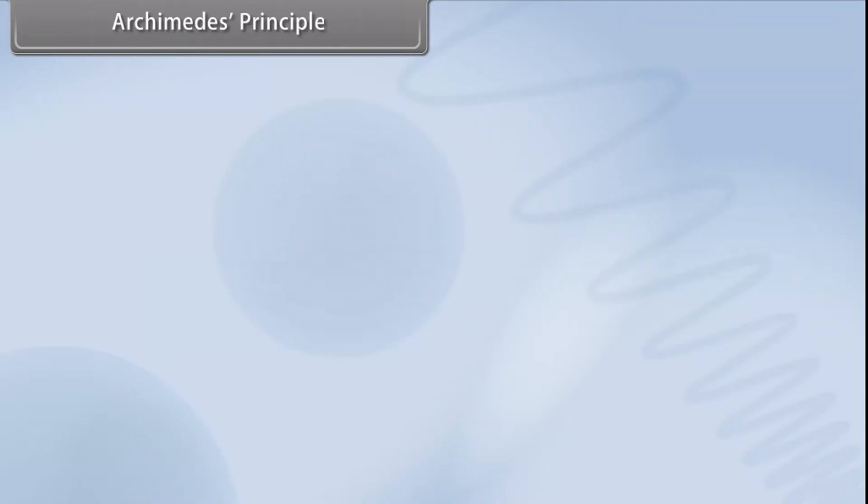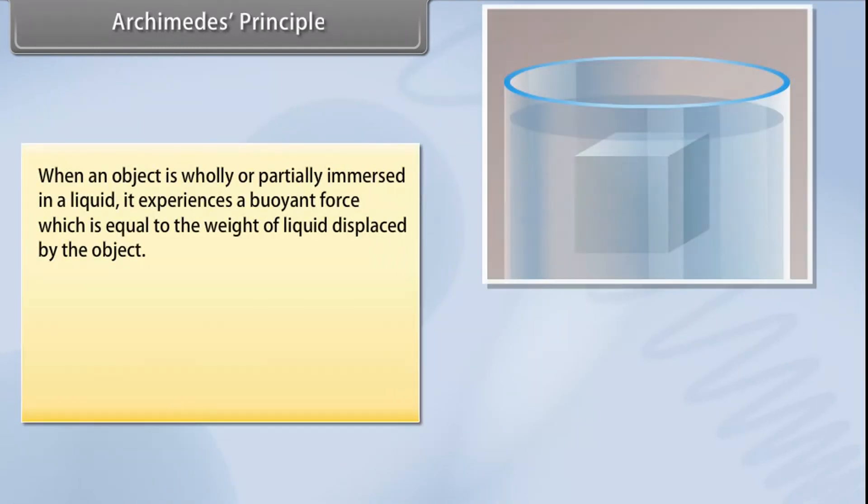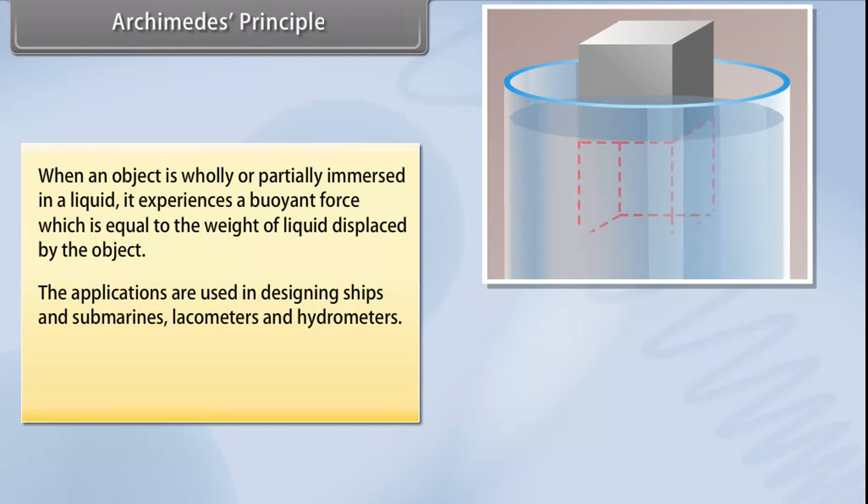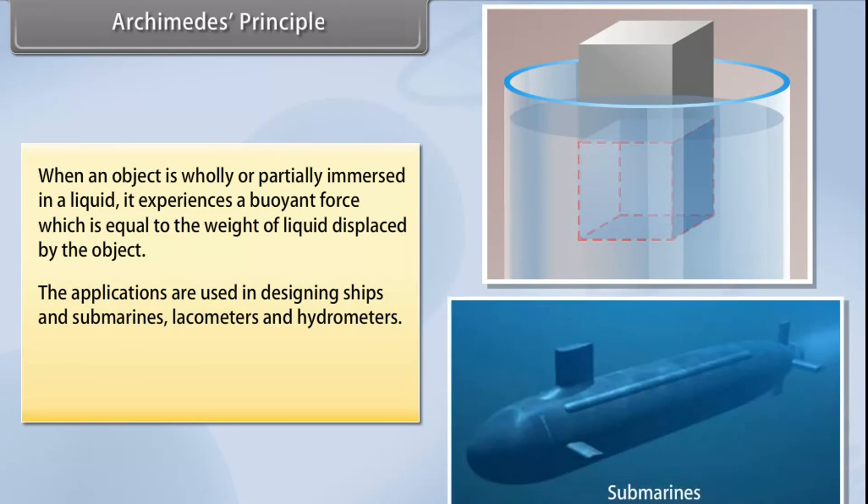Archimedes Principle: When an object is wholly or partially immersed in a liquid, it experiences a buoyant force which is equal to the weight of liquid displaced by the object. The applications are used in designing ships and submarines, lactometers and hydrometers. Buoyant force is equal to weight of liquid displaced by the object.